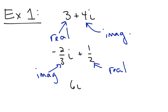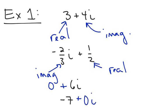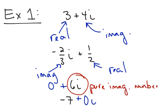If I give you 6i, remember that's the same thing as 0 plus 6i, so 0 is the real part and 6i is the imaginary part. Any real number is really a complex number — it's just that the imaginary part is 0. 6i has a special name: it's called a pure imaginary number, and that happens when you have a complex number with 0 as its real component.